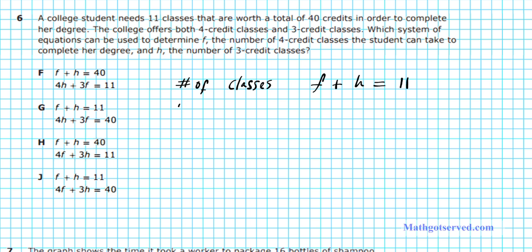The second equation is the number of credits. For the 4-credit classes, she's going to take F 4-credit classes, giving us a total of 4 times F credits. And then she's going to take H 3-credit classes, giving us a total of 3H credits. The total number of credits she's taking overall is 40 credits.